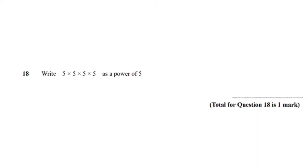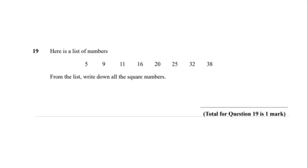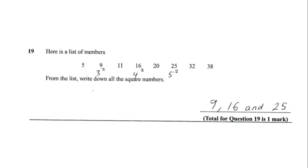Question number 18, write 5 times 5 times 5 times 5 as a power of 5. You should have got 5 to the power of 4. Question number 19, here is a list of numbers: 5, 9, 11, 16, 20, 25, 32 and 38. From this list, write down all the square numbers. You should have got 9, 16 and 25.